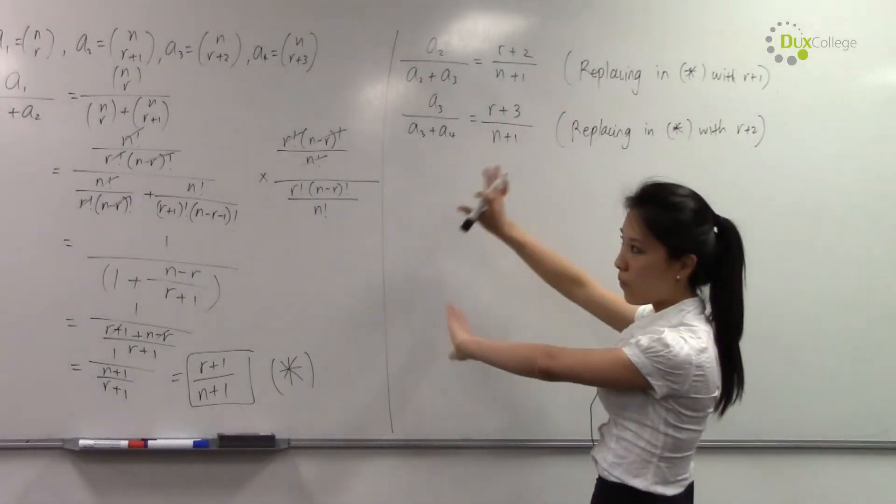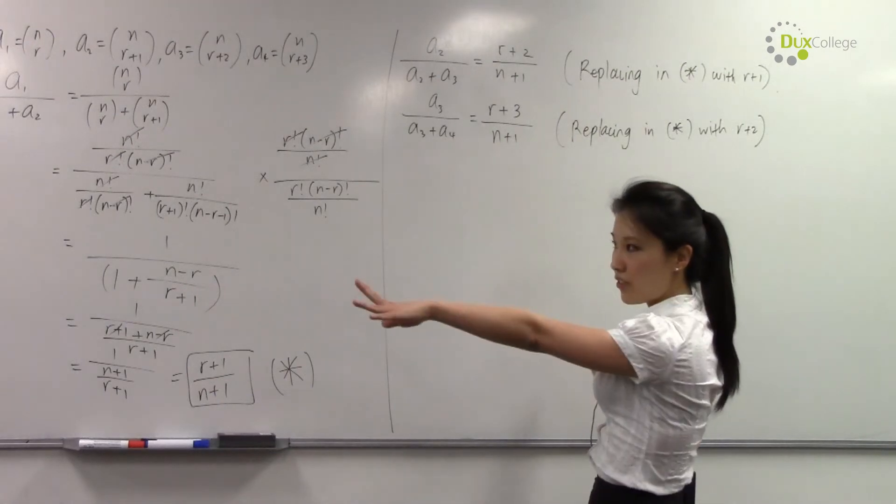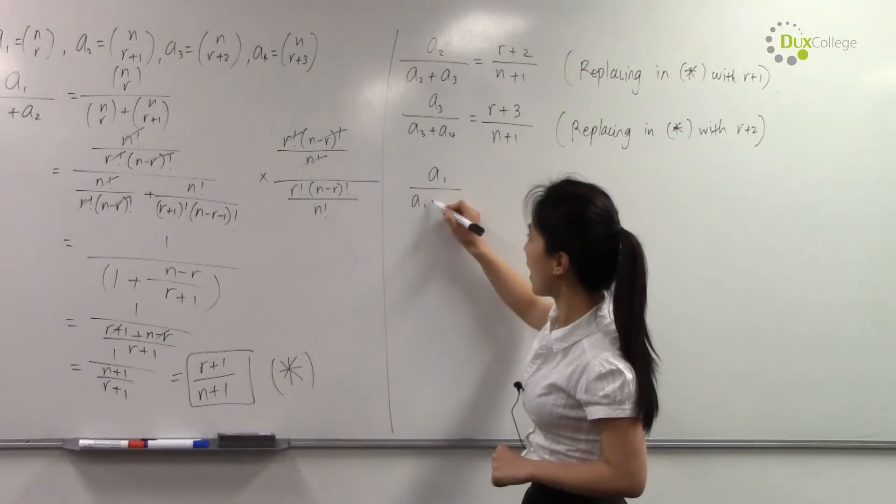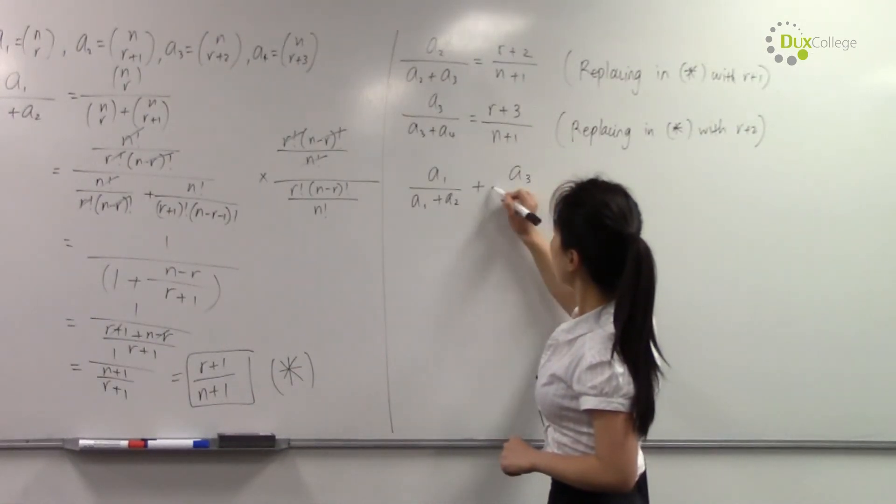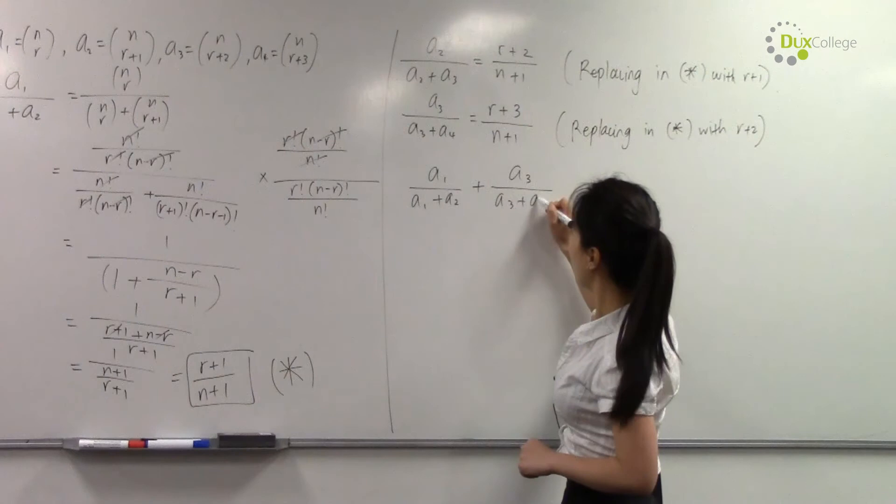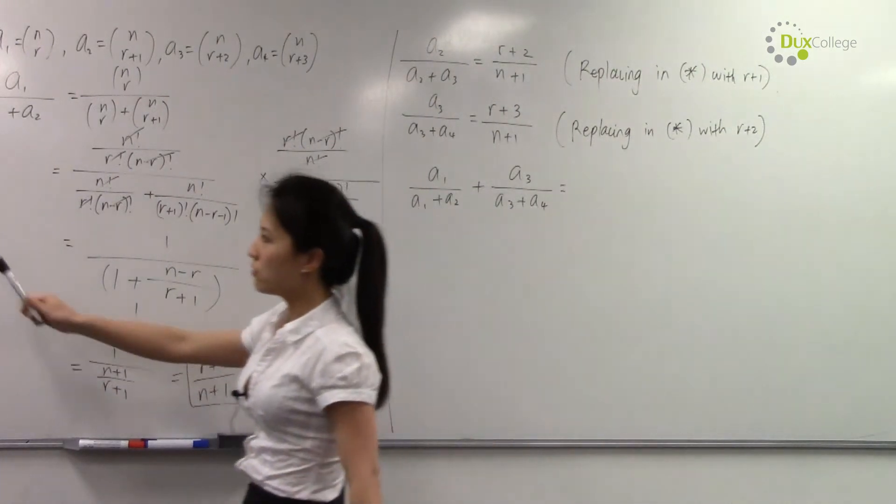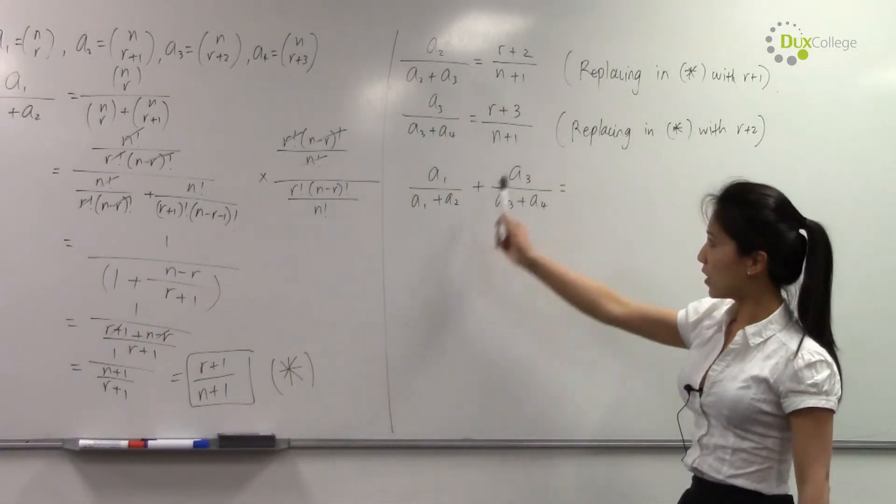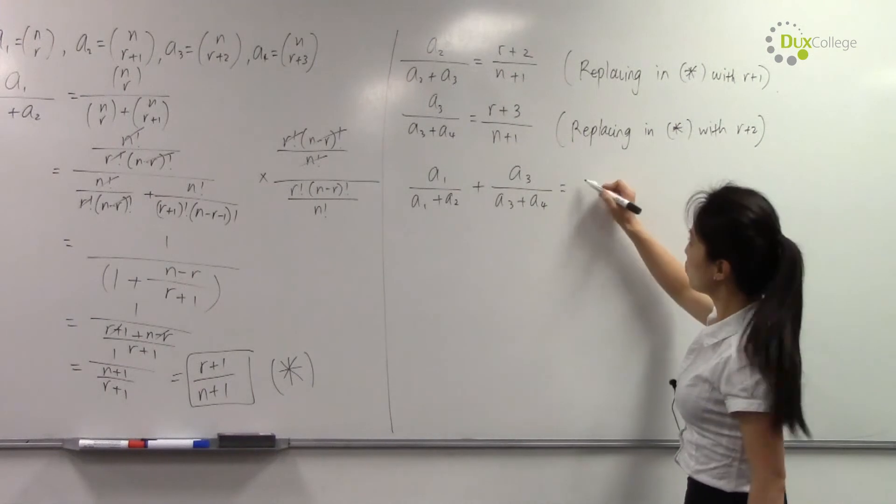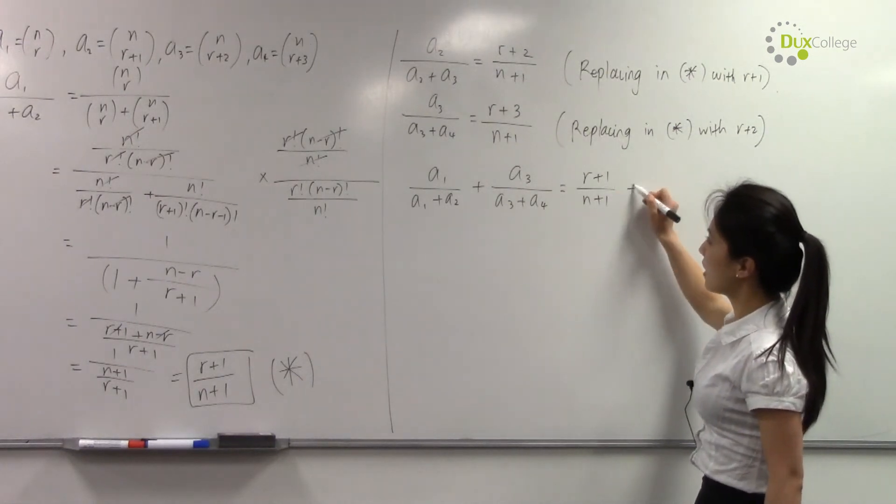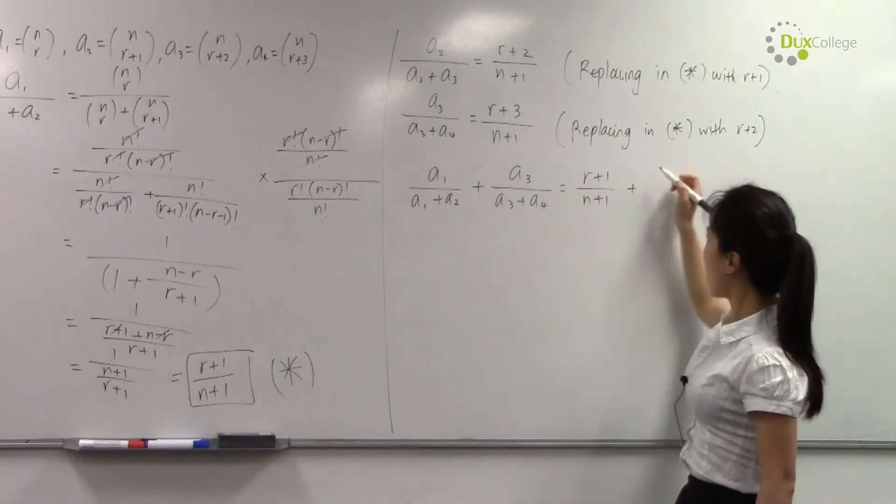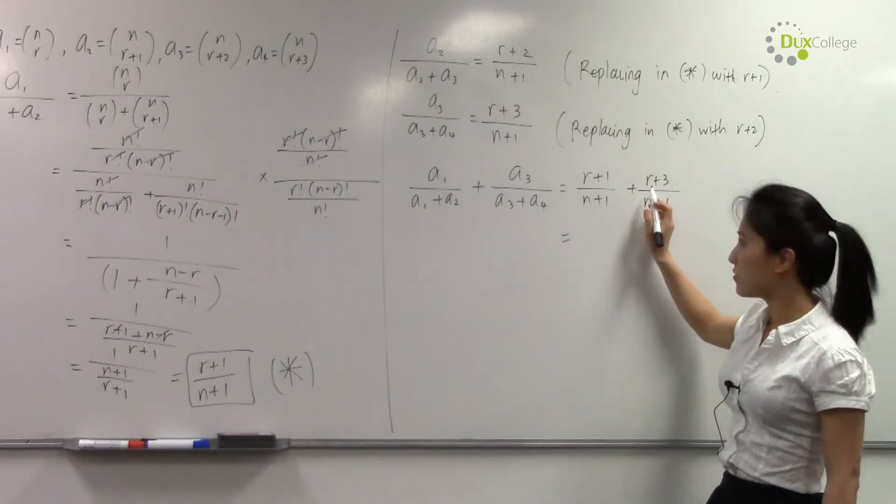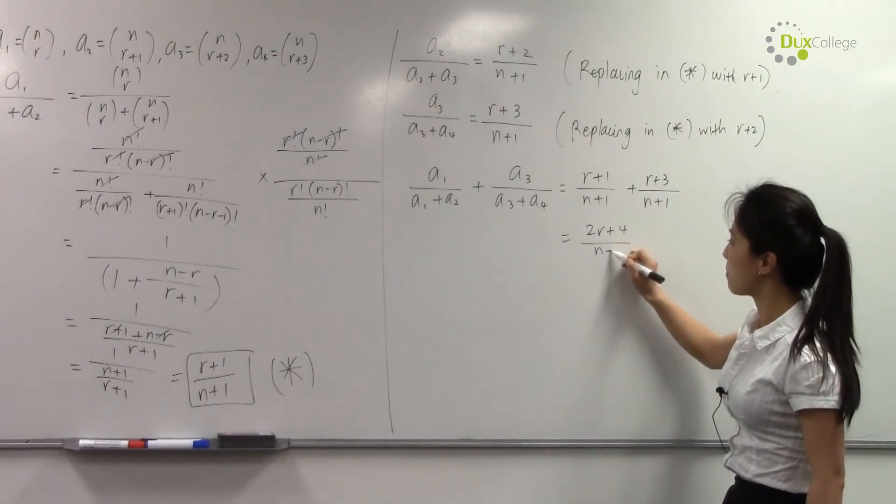Now we have all our values here. We can answer the first part of the question. So we need to prove that a₁ over (a₁+a₂) plus a₃ over (a₃+a₄) equals two lots of a₂ over (a₂+a₃). Now let's put our expressions in here. a₁ over (a₁+a₂) is equal to (r+1) over (n+1). And a₃ over (a₃+a₄) is (r+3) over (n+1). Now let's simplify this. We get (2r+4) over (n+1).